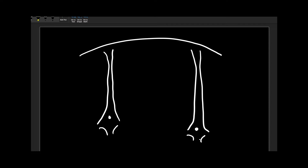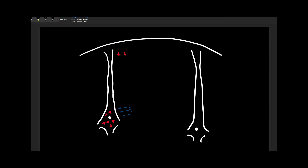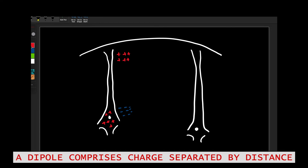When there is an excitatory post-synaptic potential, as previously discussed, there is a net increased positivity on the inside of the cell. When there is an increase in intracellular positivity, there is a relative increase in negativity on the outside of the cell in the extracellular space. The opposite end of this neuron becomes relatively more positive. So there is positive charge on one end and negative charge on the other end, separated by distance — this is called a dipole.